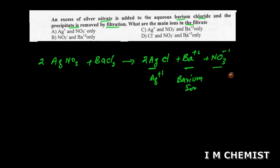When we remove the precipitate by filtration, the filtrate would contain silver ion, barium ion, and nitrate ion. Hence option C would be correct: silver ion, nitrate ion, and barium ion.